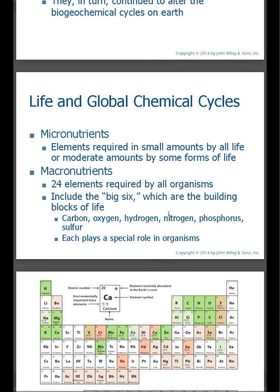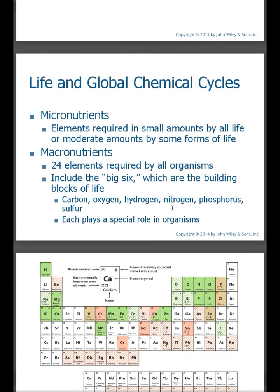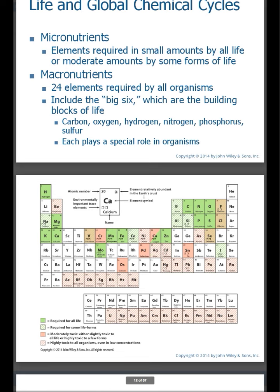Now, before we go any further in terms of biogeochemical cycles, we need to talk about two types of nutrients: micronutrients and macronutrients. Both of these types of nutrients are required for all life. Micronutrients are required in small amounts by all life. However, the macronutrients are the big ones — these are the ones that are required for all organisms to exist on Earth. The ones that we'll look at are what we call the big six, which are basically the building blocks of life: carbon, oxygen, hydrogen, nitrogen, phosphorus, and sulfur.